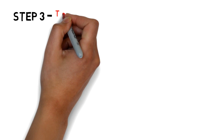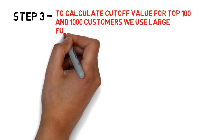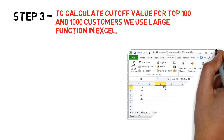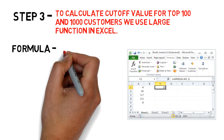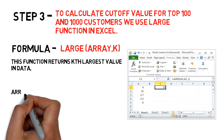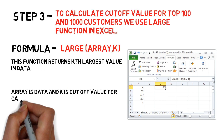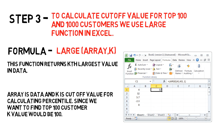Step 3: To calculate the cutoff value for top 100 and top 1000 customers, we use the LARGE function in Excel. The formula is given below — the array is your data and k is the cutoff value for calculating the percentile. Since we want to find the top 100 customers, the k value would be 100.